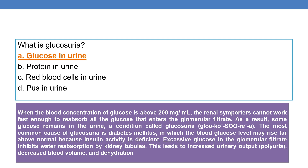What is glucosuria? Glucose in urine is called glucosuria. When the blood concentration of glucose is above 200 mg per mL, the renal transporters cannot work fast enough to reabsorb all the glucose entering the glomerular filtrate. As a result, some glucose remains in the urine. The most common cause is diabetes mellitus, where excessive glucose in the filtrate inhibits water reabsorption, leading to polyuria, decreased blood volume, and dehydration.